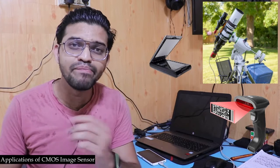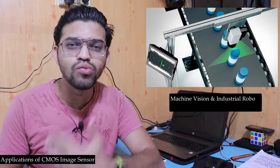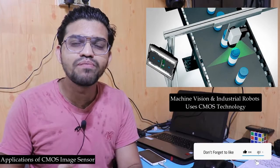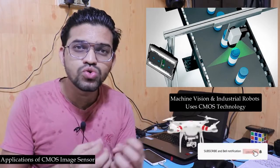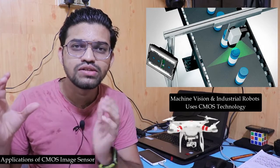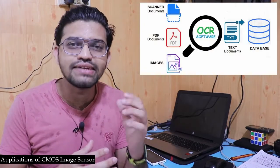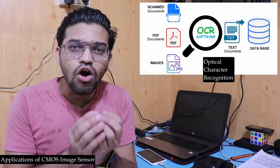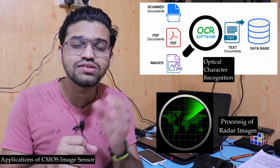CMOS sensors are used in digital cameras, digital camcorders, and CCTV systems. Some astronomical telescopes use this type of image sensor to process data. The majority of scanners and barcode readers also use CMOS sensors. In machine vision, robots and drones are equipped with CMOS sensors. Additionally, CMOS sensors are used in OCR — optical character recognition — and for processing radar images.